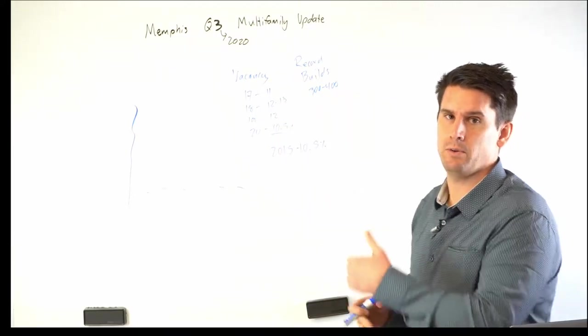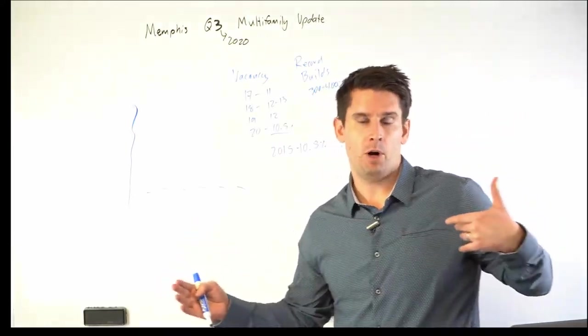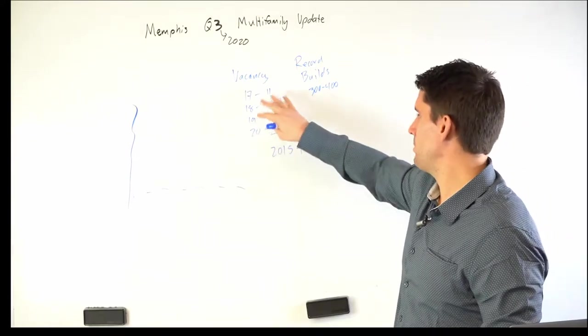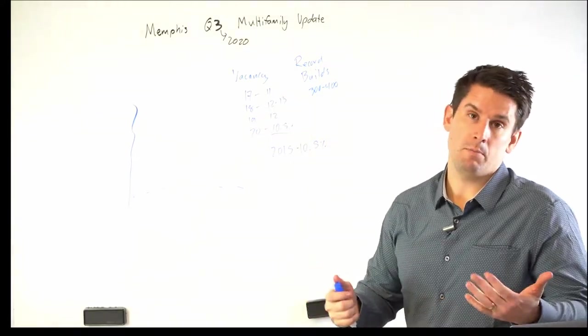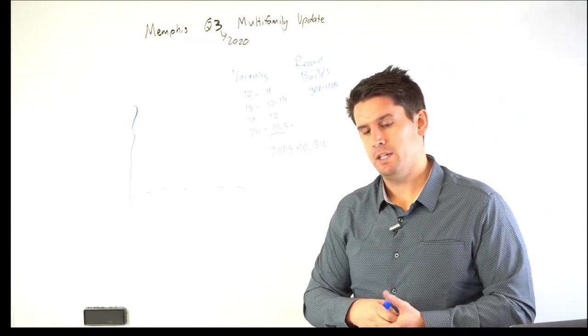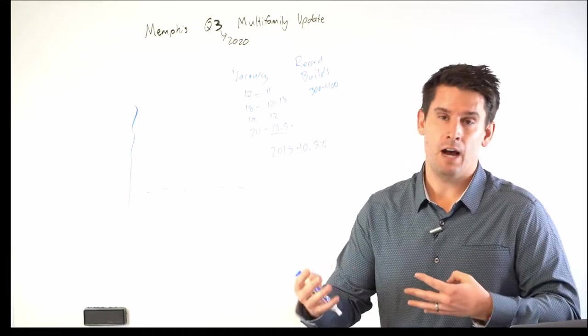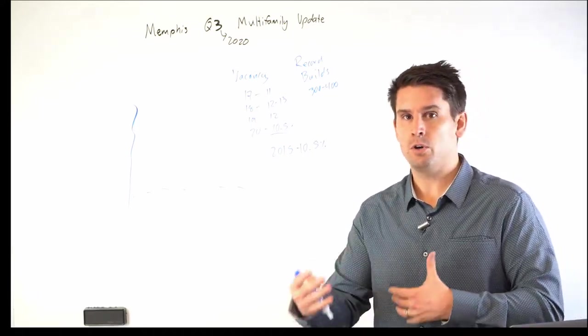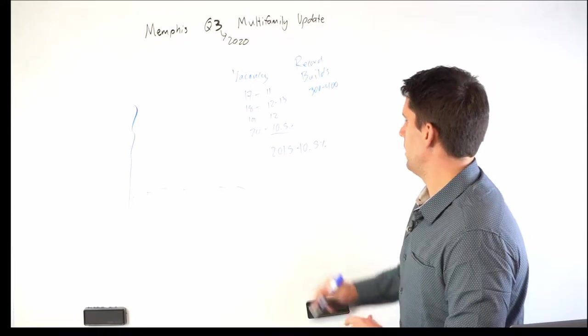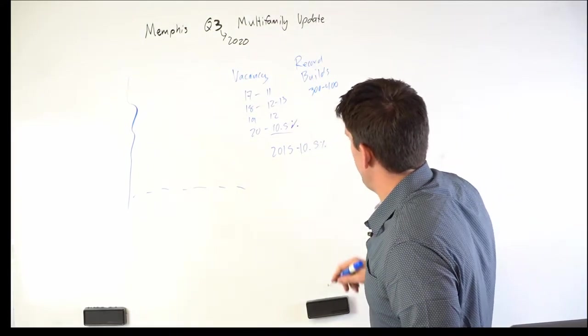And this all kind of fluctuates a lot with how many new units are being built and coming on board because a brand new 300-unit apartment complex is going to be 0% occupied or 100% vacant for a while. So that's kind of factored in there. They don't skew those numbers, you'd think they would do that, but they don't skew that in. They wait until a year after the apartment's built to really go off these numbers.